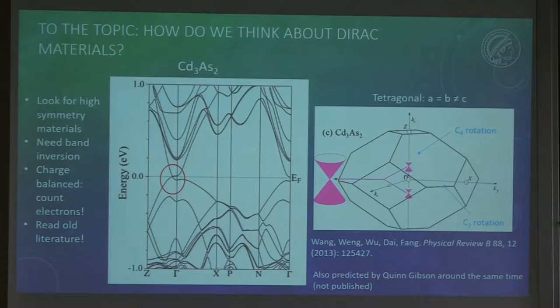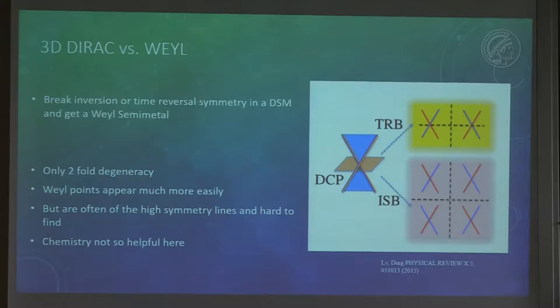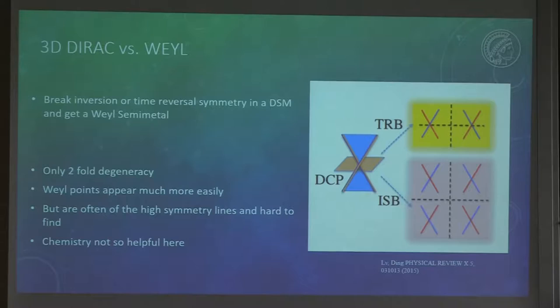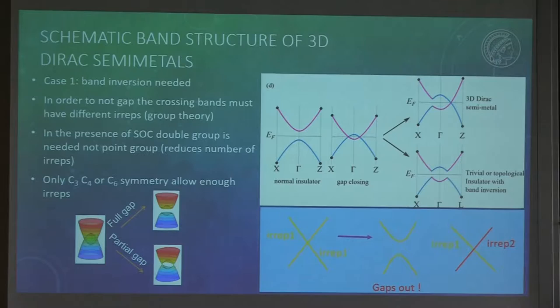Since this workshop is called Dirac and Weyl materials, I have one slide about those things. In a Dirac point we have four-fold degeneracy, and in Weyl materials we can break some symmetry to split them into two-fold degeneracy points. But most of the symmetry rules we chemists like to think about are not really valid anymore for those predictions, which is why during most of my talk I'm going to focus on Dirac materials.